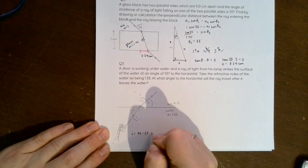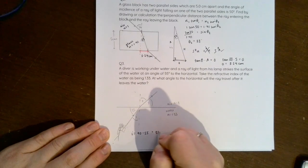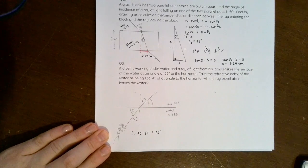So this angle is 55, but that's not the angle of incidence. So I must be equal to 90 minus 55, giving me 35 degrees. That's important, the angle of incidence.